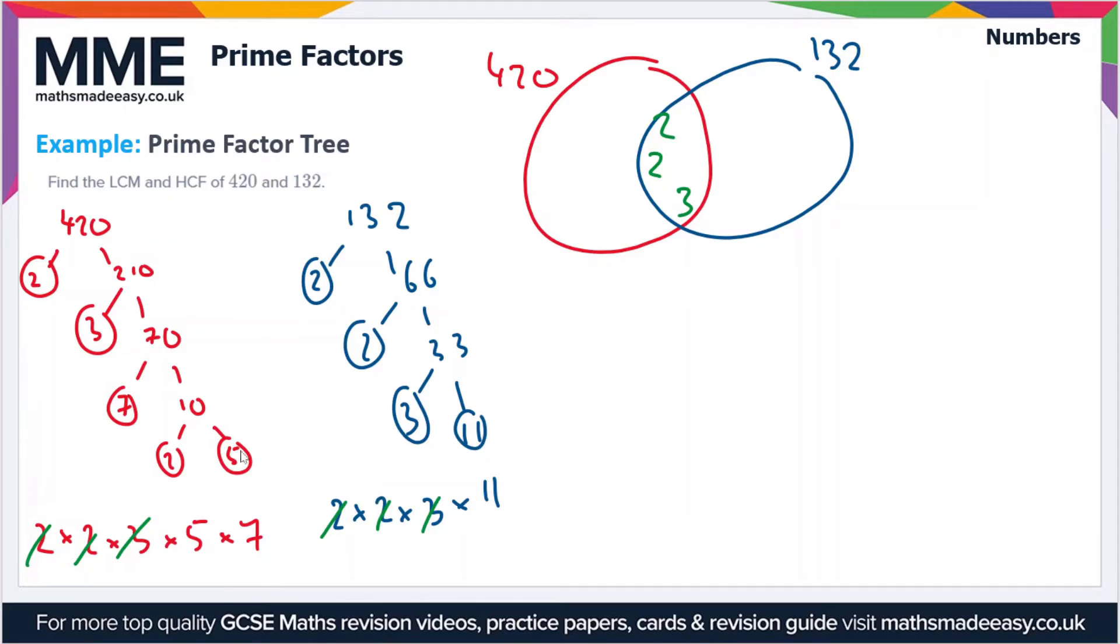Then all that's left is the 5 and the 7. There's no 5s or 7s in the prime factorization of 132, so we'll cross them off. The 11 from the prime factorization of 132 is the only thing left to add to the Venn diagram.